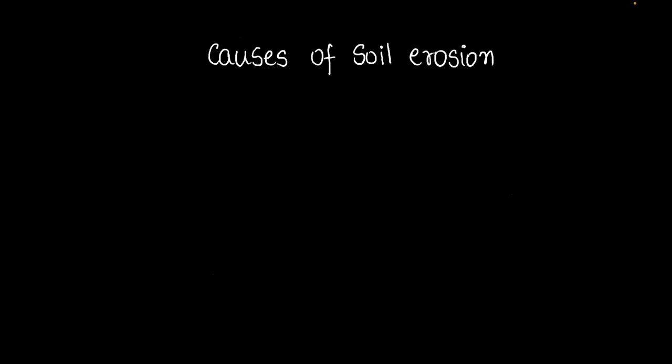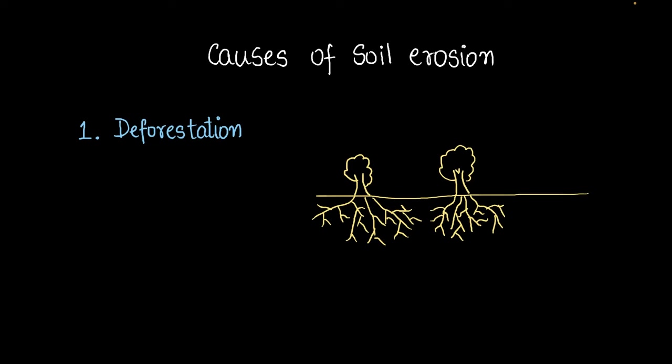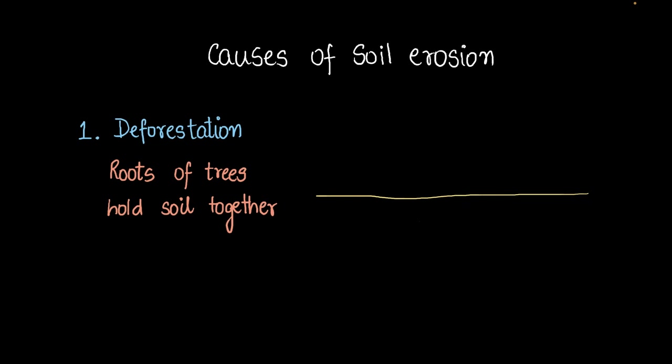So next we begin with the causes of soil erosion. Deforestation is the single main cause for soil erosion. If you have land and let's say you have trees, these trees have roots and the roots of trees bind soil together. They hold them in place and that prevents this topmost layer from getting wiped away. But in case these trees are removed, you're left with nothing to hold the soil in place, and so now wind and water can easily cause erosion to the soil.